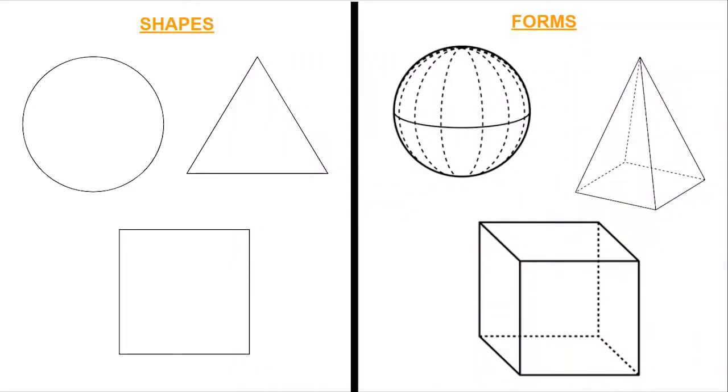On this slide we have shapes on the left. We have a circle, a triangle, and a square and on the right hand side we have their corresponding forms. So a circle turns into a sphere, a triangle turns into a pyramid, and a square turns into a cube and on our forms you can see those dotted lines there. Those are like guidelines, maybe those would be pencil lines we would eventually erase or lines we might make lighter depending on what material our forms are made out of.